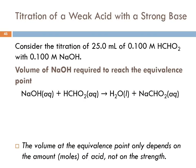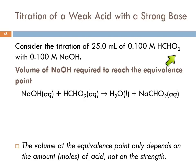Now we're going to look at titration of a weak acid with a strong base. We're going to consider titrating 25 milliliters of 0.100 molar HCHO2 — formic acid — with 0.100 molar sodium hydroxide.